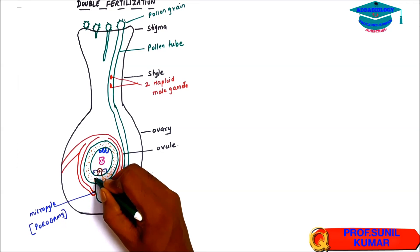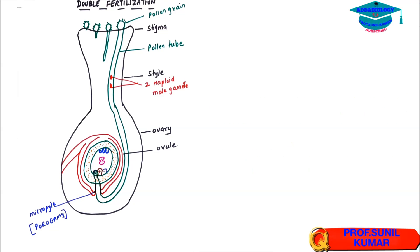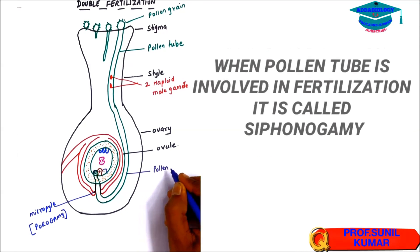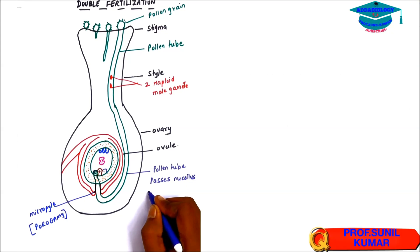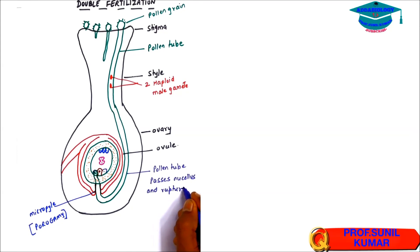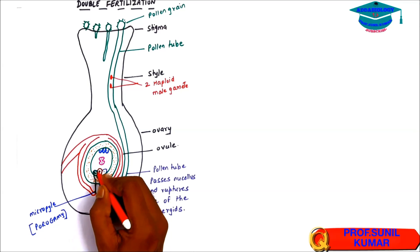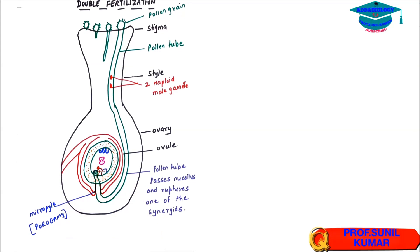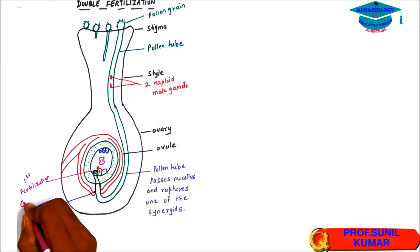The pollen tube ruptures one of the synergids, and as a result all the cytoplasm of the pollen grain and the male gametes enter into the embryo sac. When the pollen tube is involved in fertilization it is called siphonogamy. The pollen tube passes through the nucellus and ruptures one of the synergids. The first male gamete then fertilizes the egg cell — both are haploid — forming a diploid zygote, which further develops into the embryo. This is called first fertilization.